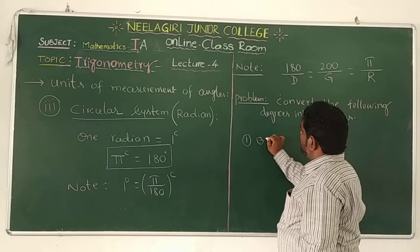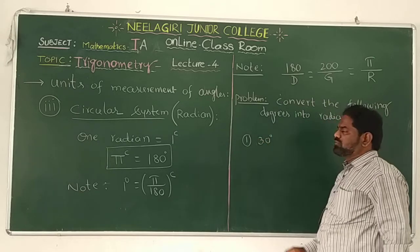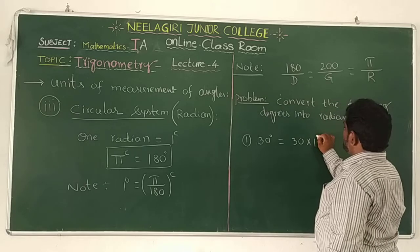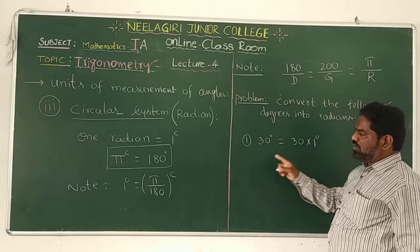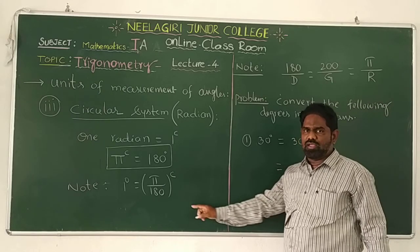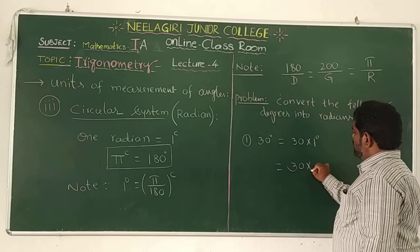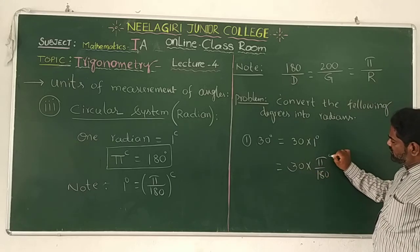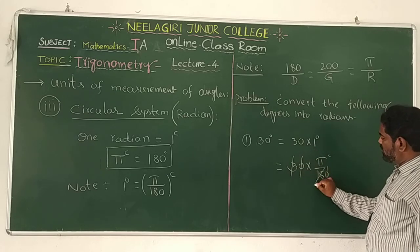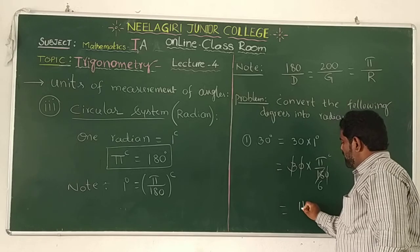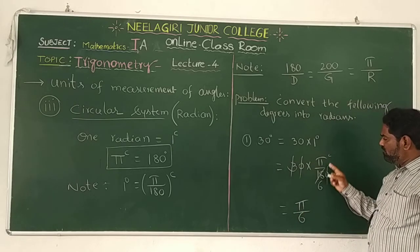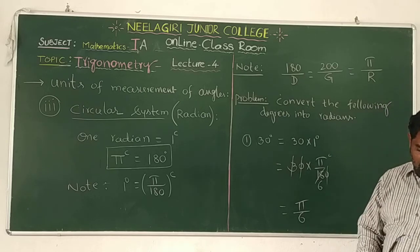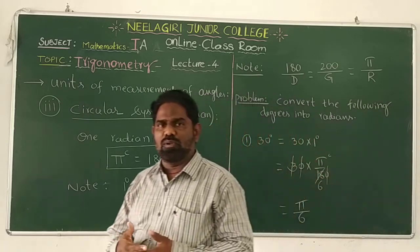The first problem: convert 30 degrees into radians. This can be written as 30 into 1 degree, and 1 degree equals pi by 180 radians. So it becomes 30 into pi by 180 radians. Cancelling, we get pi by 6 radians. So 30 degrees equals pi by 6 radians. We are continuing the remaining problems in the next class.